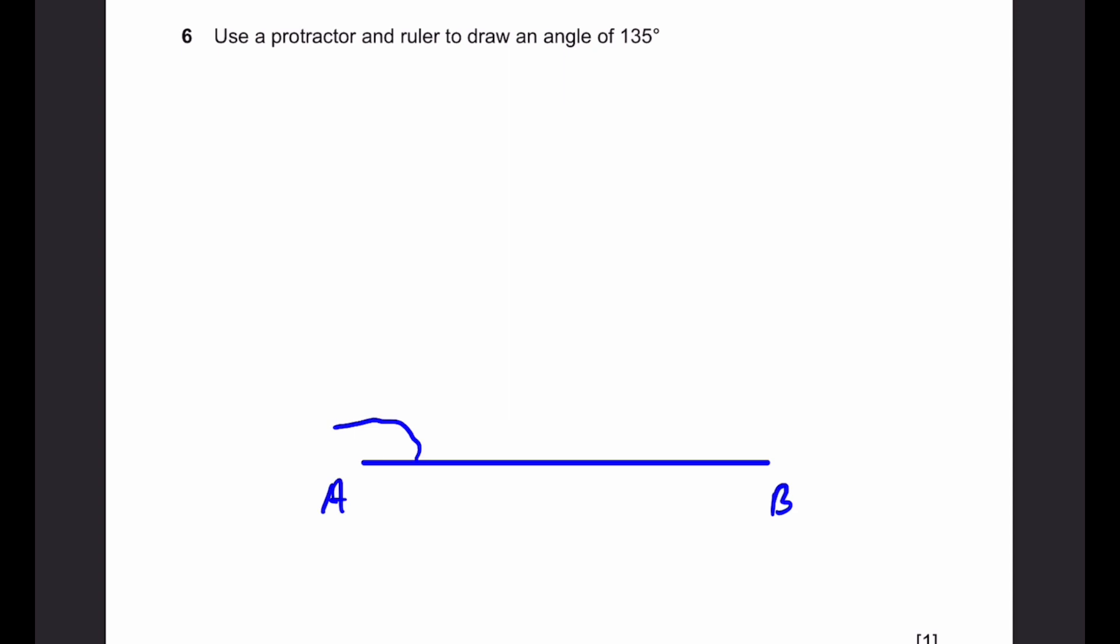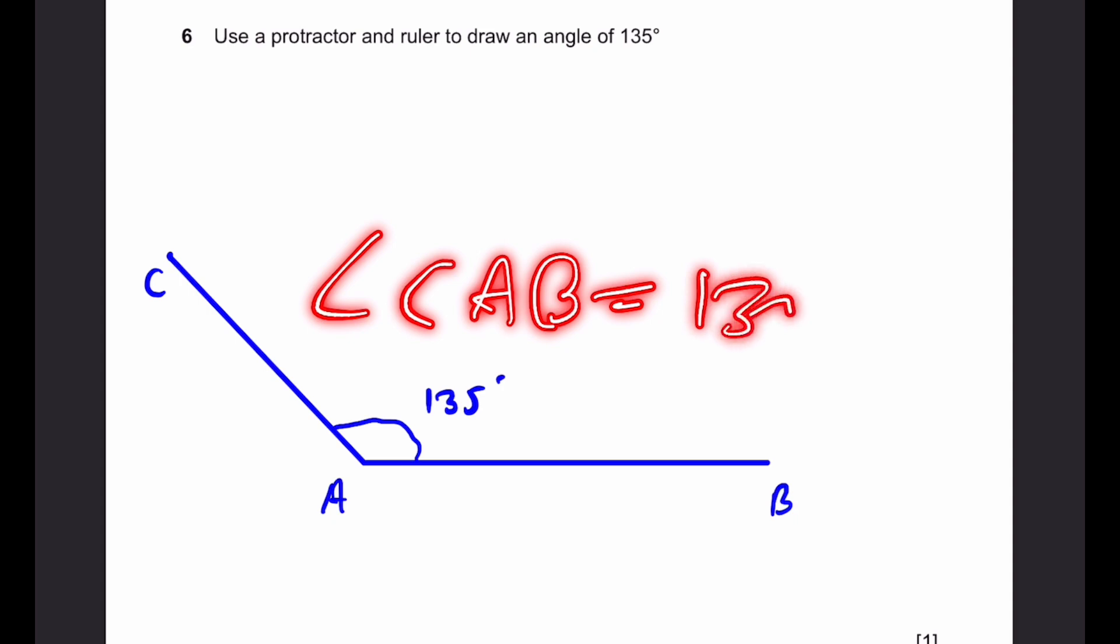In this case, because I've taken A, we go this direction, 135, and draw a line over there. If we took B as the middle point of the angle, or the point where the angle is formed, then we have to measure in this direction to draw a line there. So, since I took A, we can measure the angle, mark the point using the protractor, and connect it using a ruler. This angle has to be 135 degrees. And we can mark this point as C. That's the answer. Angle CAB equals 135 degrees.